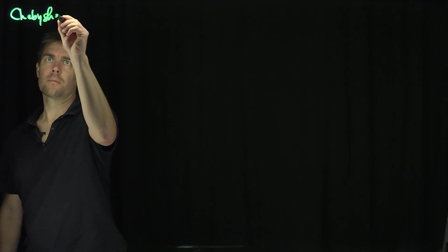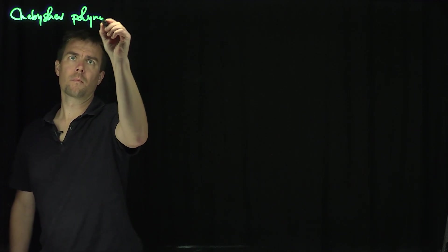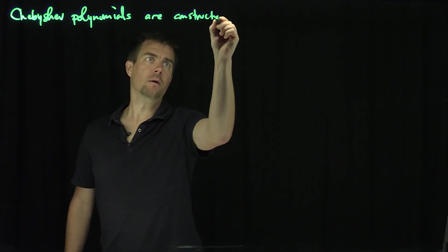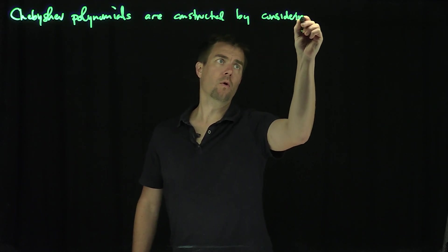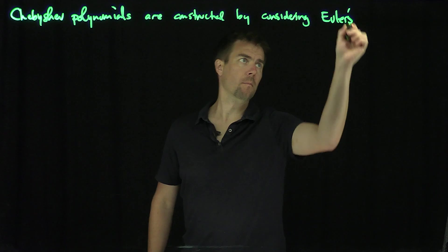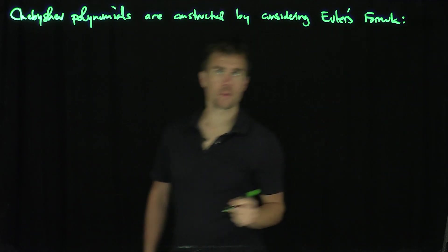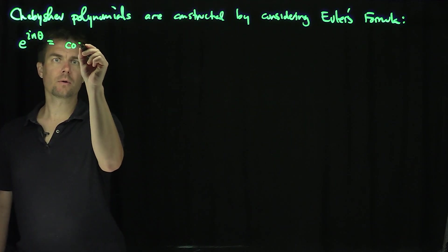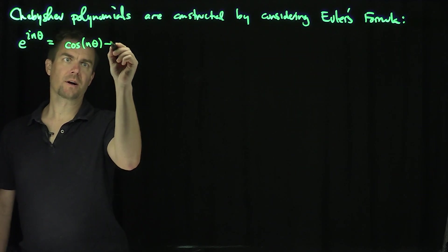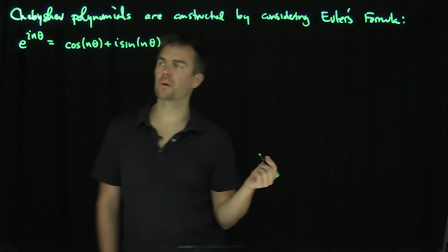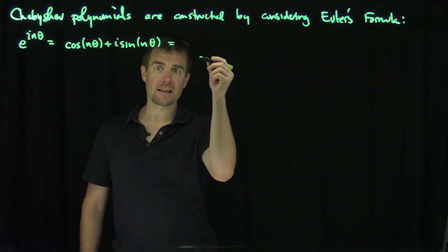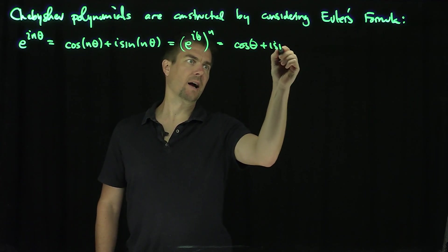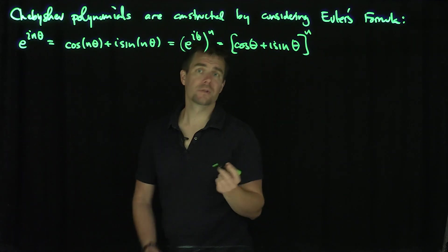Chebyshev polynomials are constructed by considering Euler's formula. The idea is that e to the i·n·theta equals cosine(n·theta) plus i·sine(n·theta) by Euler's formula, but we can also write this as (e^(i·theta))^n, which equals (cosine(theta) + i·sine(theta))^n. Now we can apply the binomial theorem to this expression.